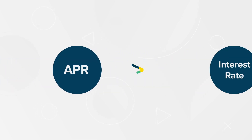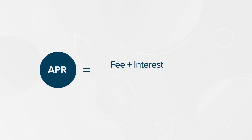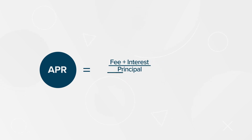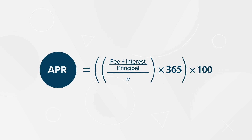The APR of a loan is therefore higher than the stated interest rate if there are any fees associated with the loan. The formula for APR is the total fees and interest of the loan, divided by the principal of the loan, divided by n, where n is equal to the number of days of the loan. Multiply this value by 365 days to convert the value to an annual rate, then multiply by 100 to state the value as a percentage.